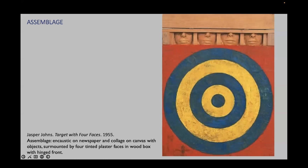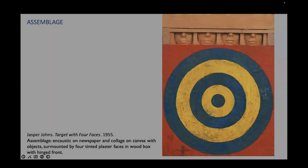These are plaster casts taken from life from a single model over several months, introducing a sculptural presence that reinforces the objectness of the painting. In Johns' hands, common subjects such as the shooting target become objects of contemplation. His works, along with those of Rauschenberg, are often categorized as Neo-Dada because they draw inspiration from the Dada movement while providing a bridge between abstract expressionism and the emerging pop art movement.